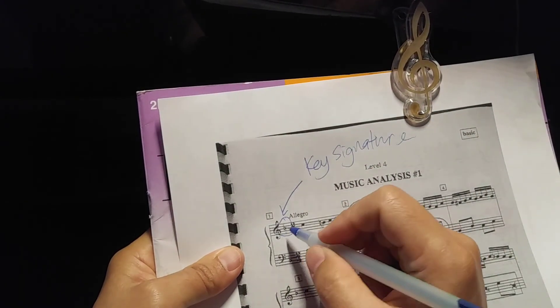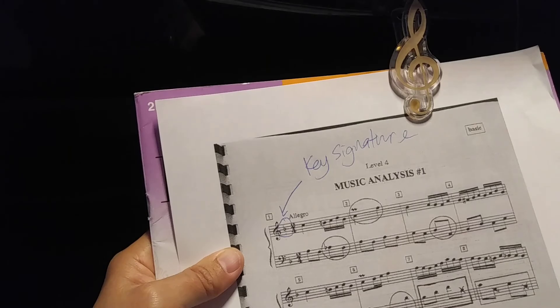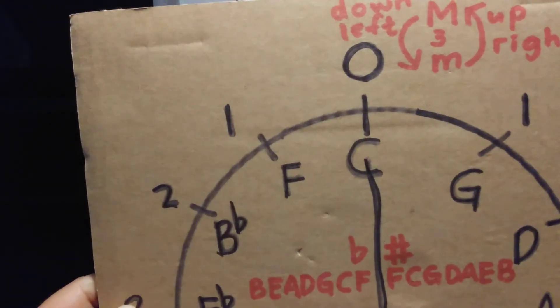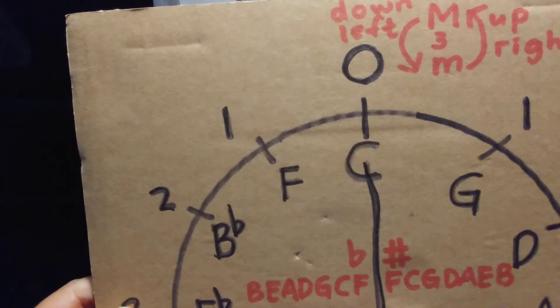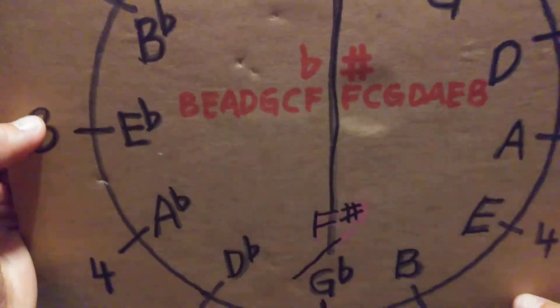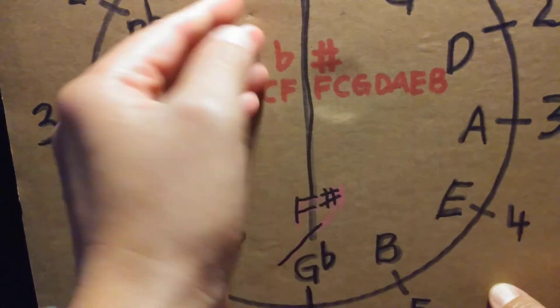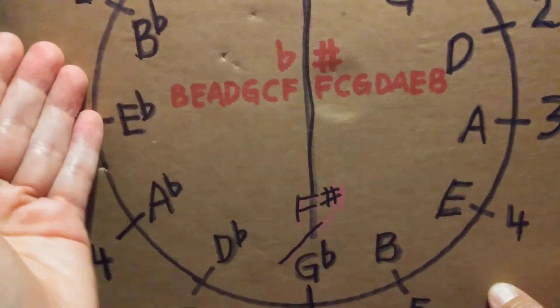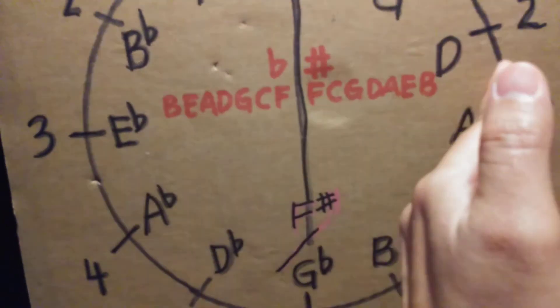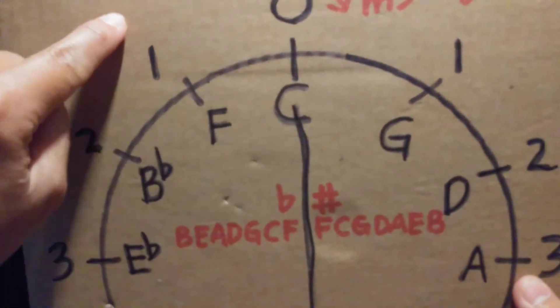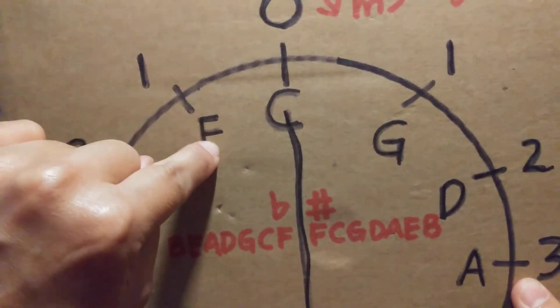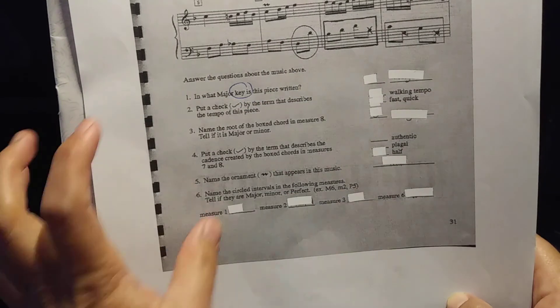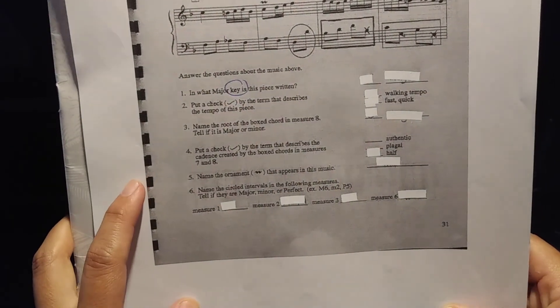Since you only have one flat, in order to know the key signature, you need your Sokolovic. Only one flat — this side is the flat side, that side is the sharp side. One flat is the key of F major. So you write F major over here.